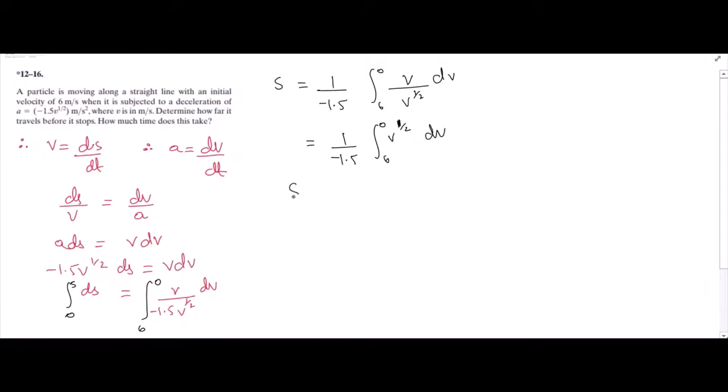We can write this as s is equal to 2 over negative 4.5, and we have v to the 3 over 2, and we have to put the limits. So we have 2 over negative 4.5 times [0 minus 6 to the power 3 over 2]. This would give us s is equal to 6.53 meters.